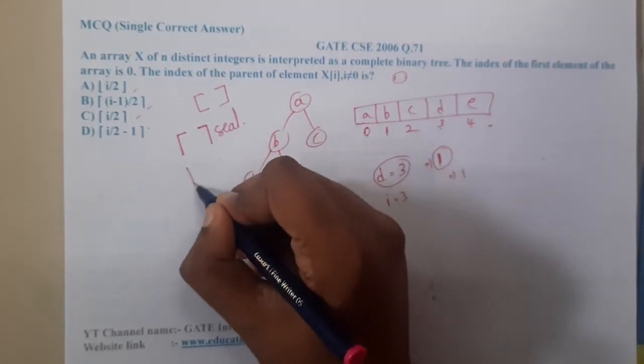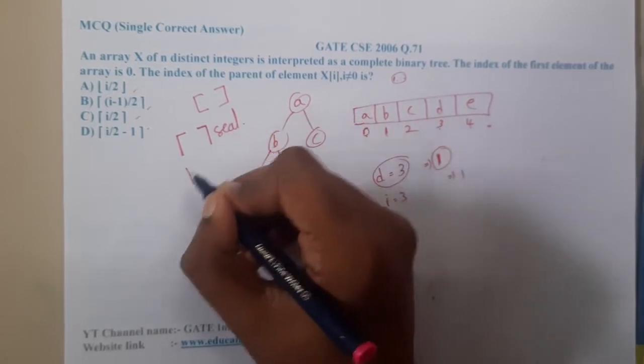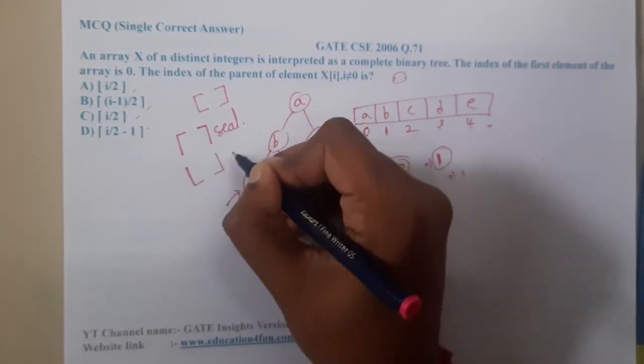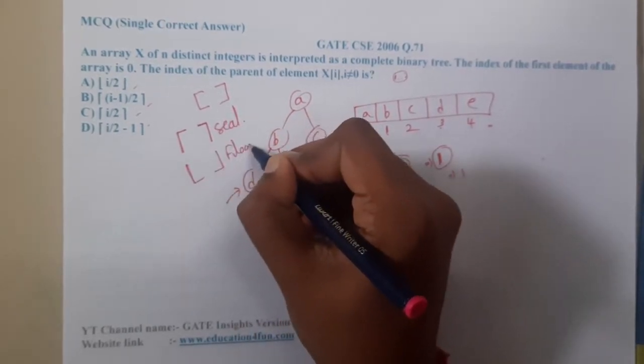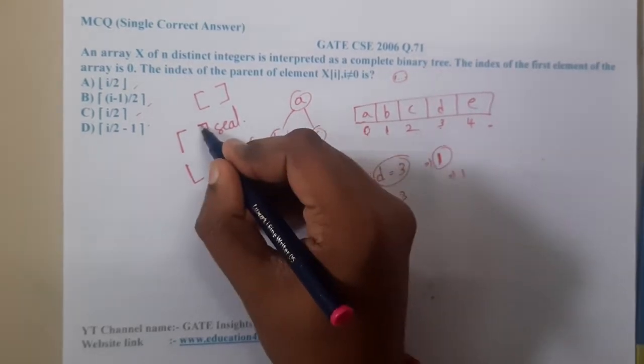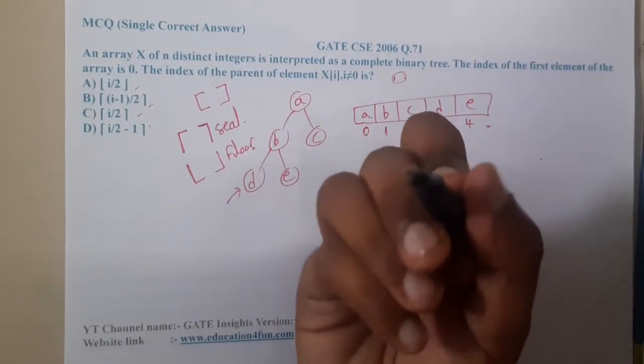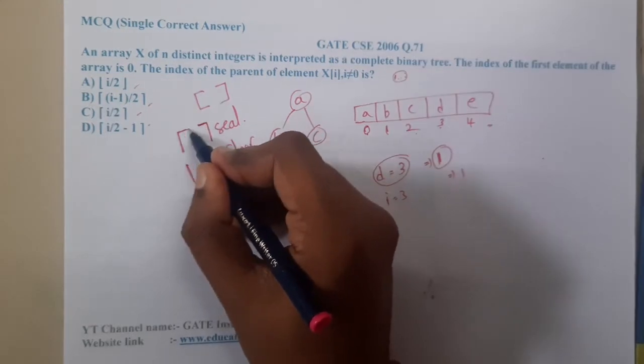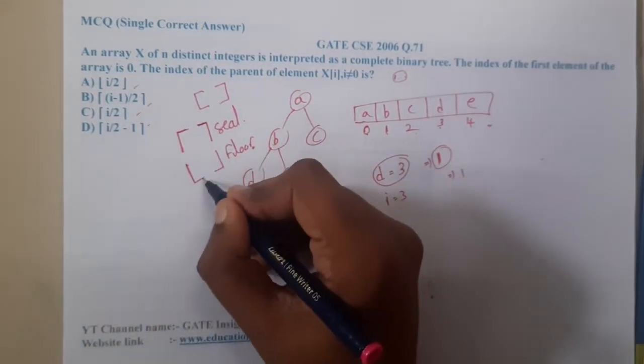And the bottom one is called as floor. The simple trick to remember is: where will be our ceiling fans? They will be above us. That is the reason why it will be above us. Where is our floor, like tiles and all those things at the floor bottom.